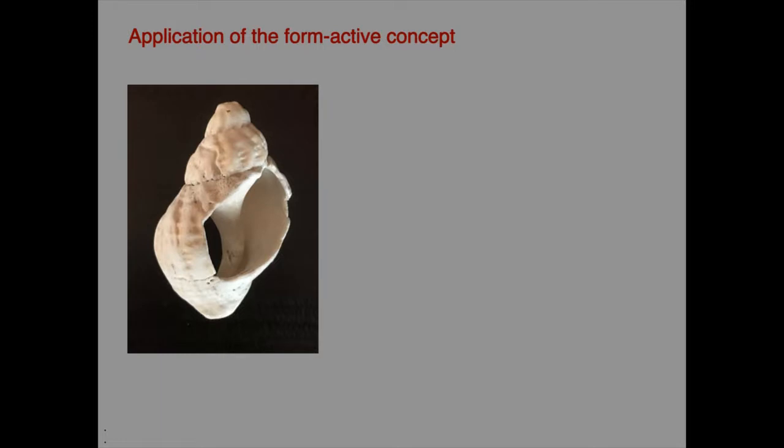This approach is often termed biomimicry, inspired by such aphorisms as 'in nature, materials are expensive and shape is cheap.' The implication is that natural forms are efficient because nature always uses material efficiently. The engaging form of this shelled creature, which has both an intriguing geometry and looks as though it ought to be efficient, is an example of the types of forms quoted in biomimicry circles. Let's see what the form active concept might tell us about this shell.